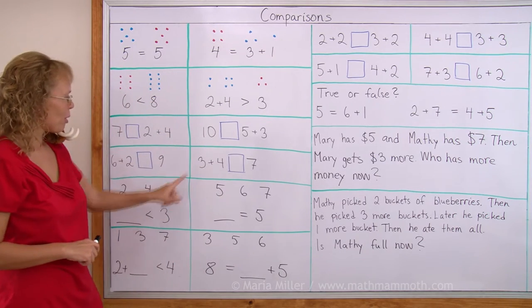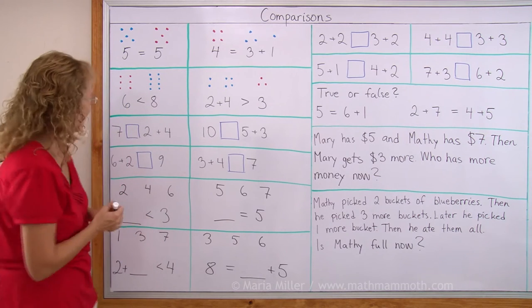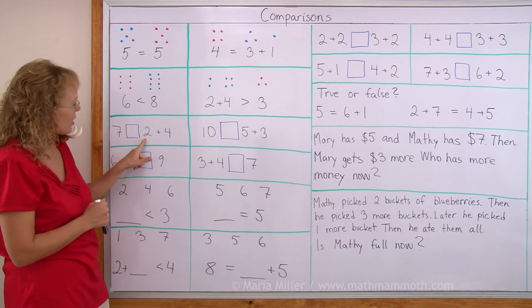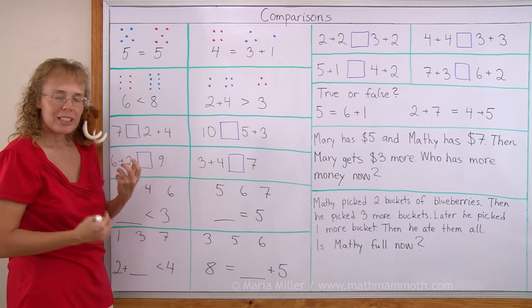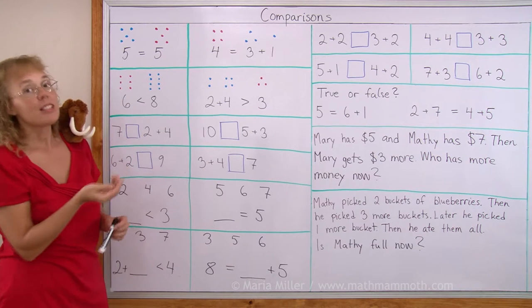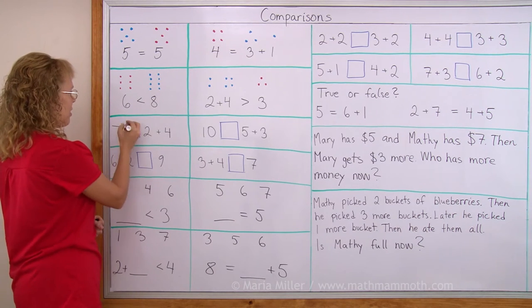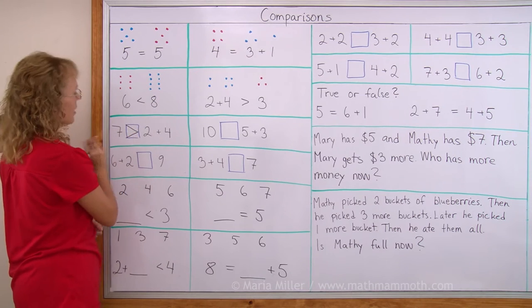Over here, in these blue boxes, we need to now write the alligator's mouth one way or the other. 7, and then on this side, 2 plus 4. Which one is more? 2 plus 4 is the same as 4 plus 2 is 6. 6 and 7. 7 is more. 7 is greater than 6.